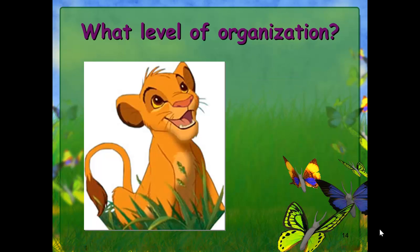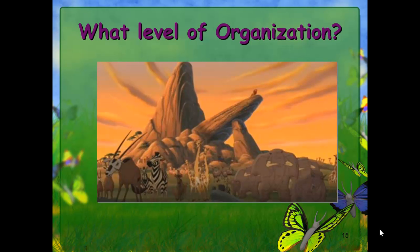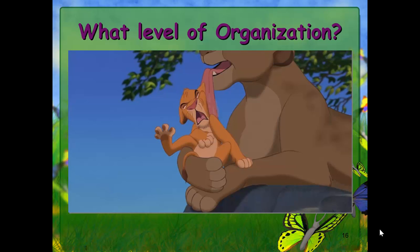Going over the levels of organization: one lion would be an organism because it's just one member of the species. A family of elephants, giraffes, zebras, and gazelles all living in the same area — those are different species, so those are different populations all in the same area, making it a community. A group of baby lions of the same species would be a population.